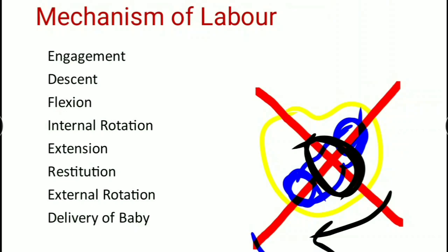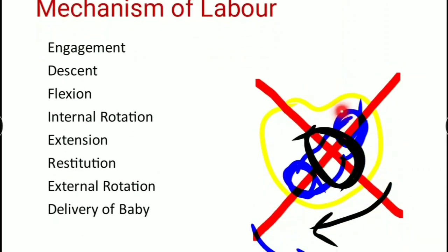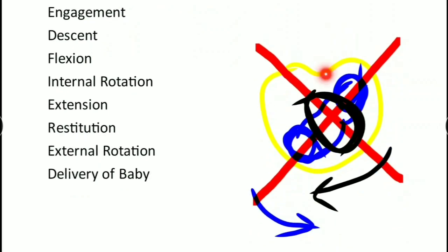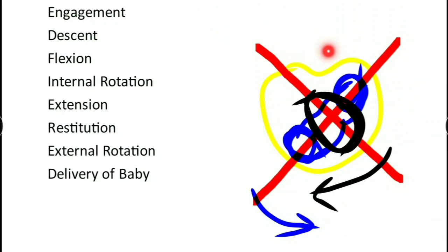In internal rotation, this alignment of the child's head - the long axis aligns in the AP diameter, which is the long axis of the pelvis. So if this is the head and this is the long axis of the head, it has to rotate to align the head in the AP axis.